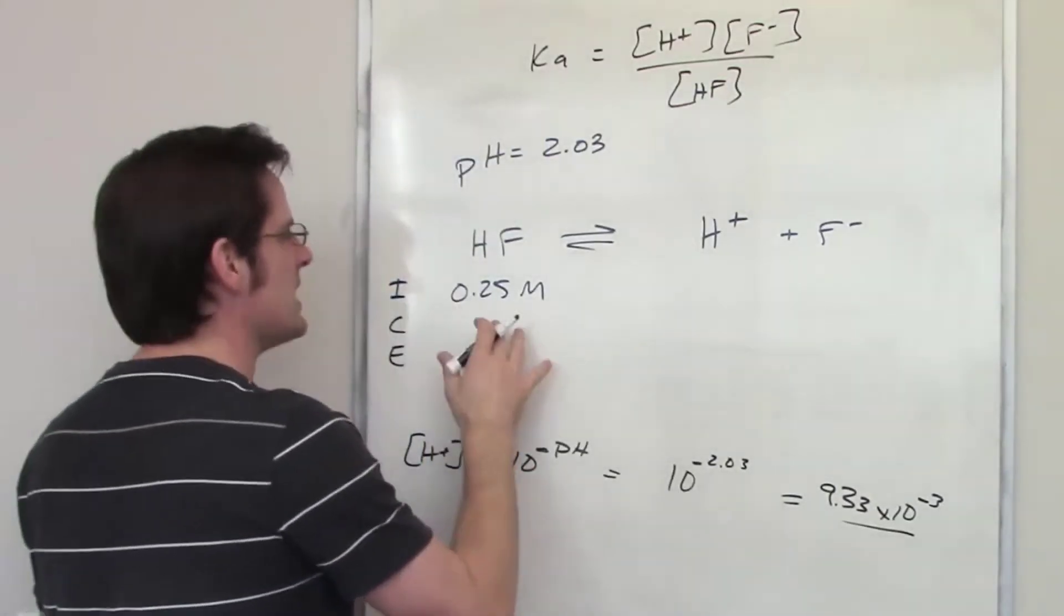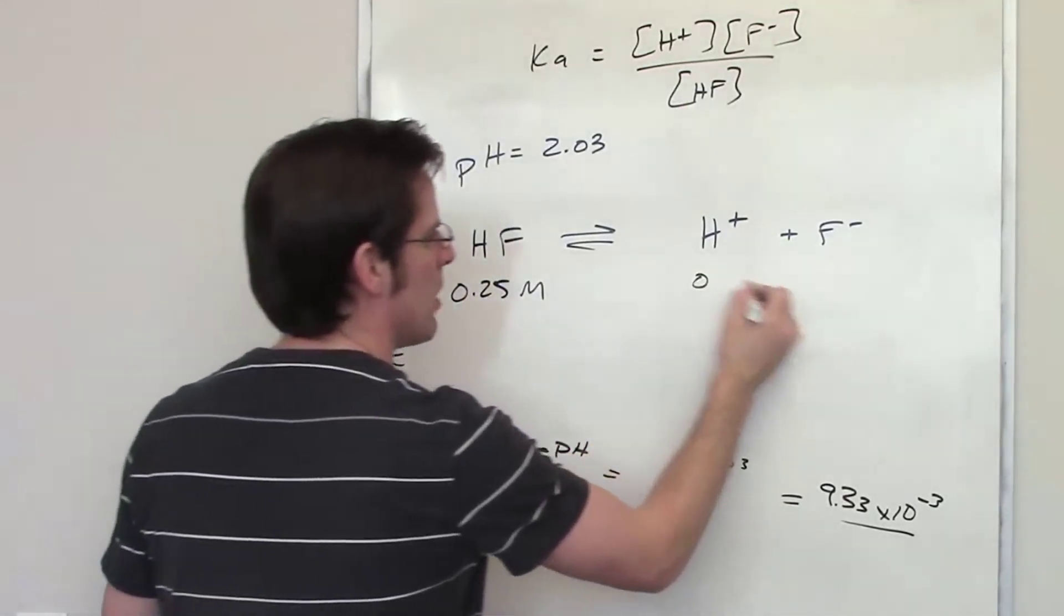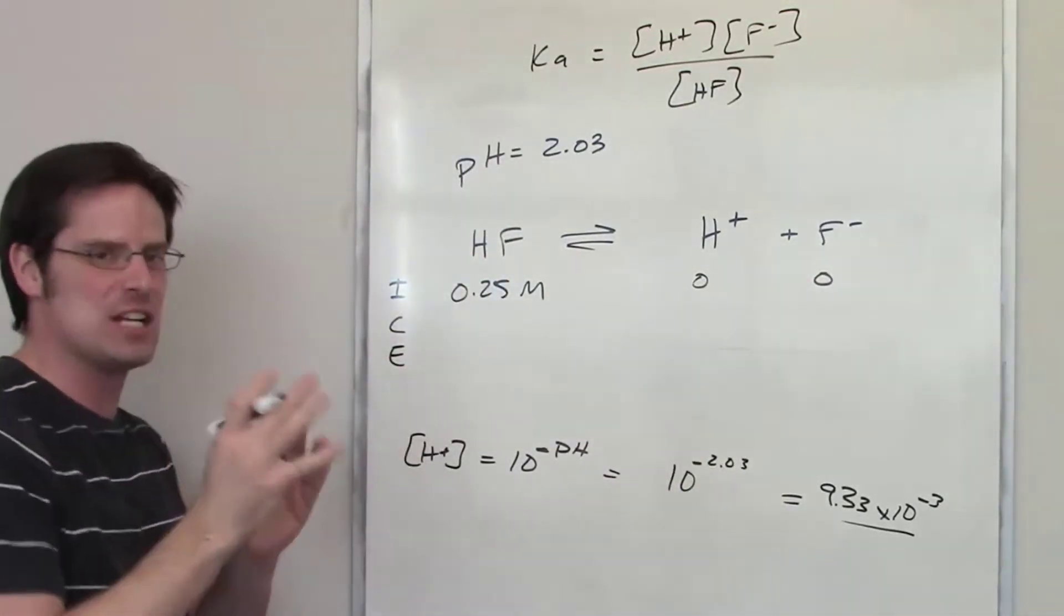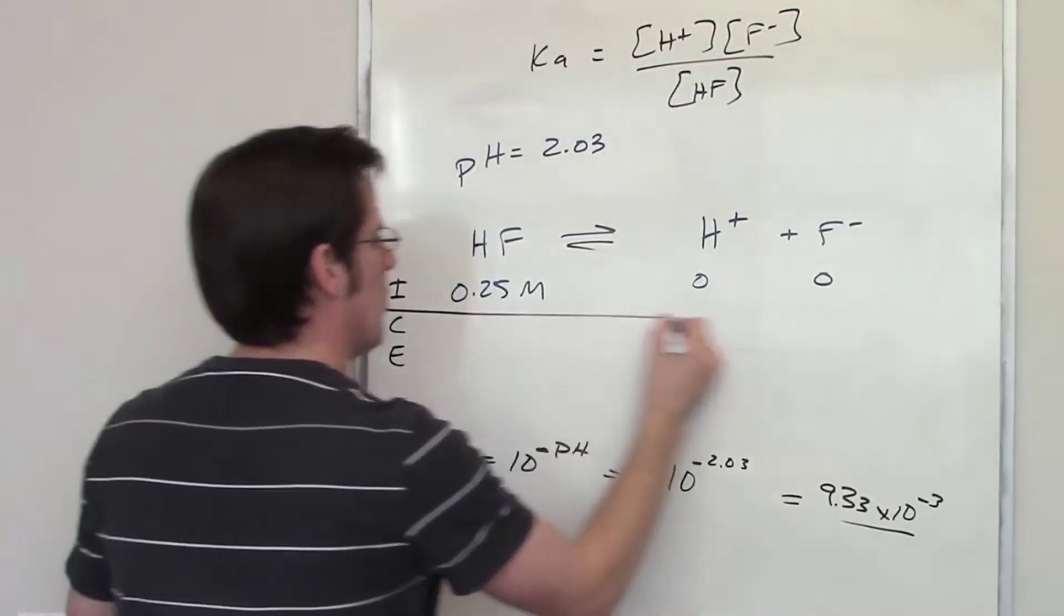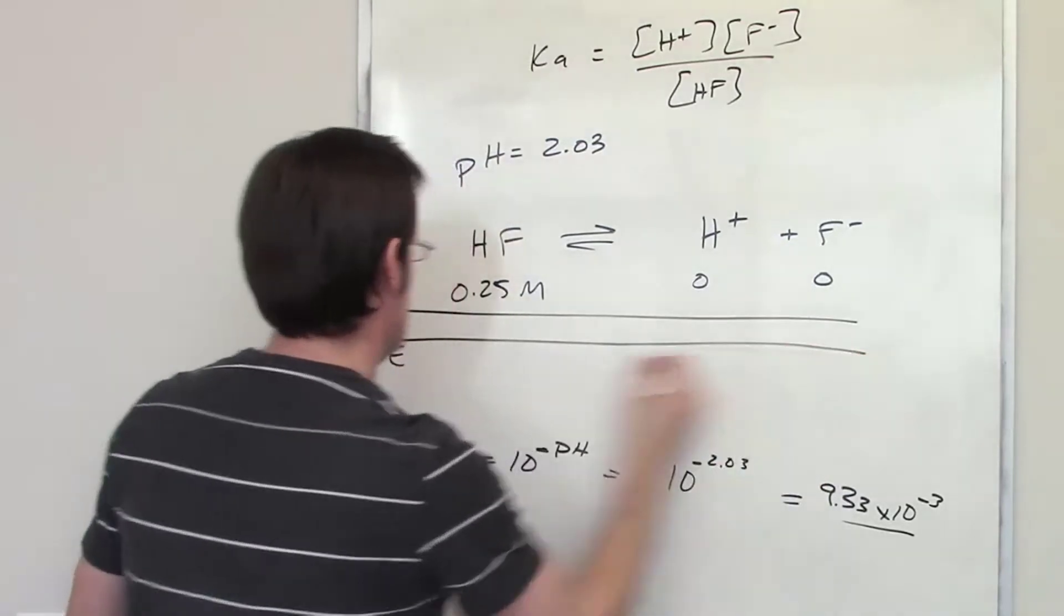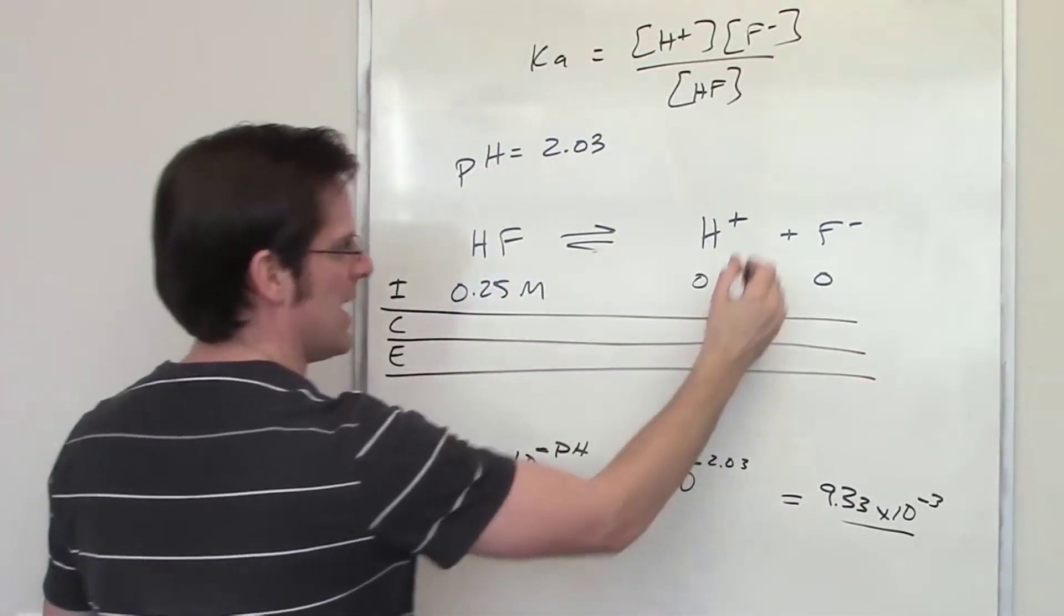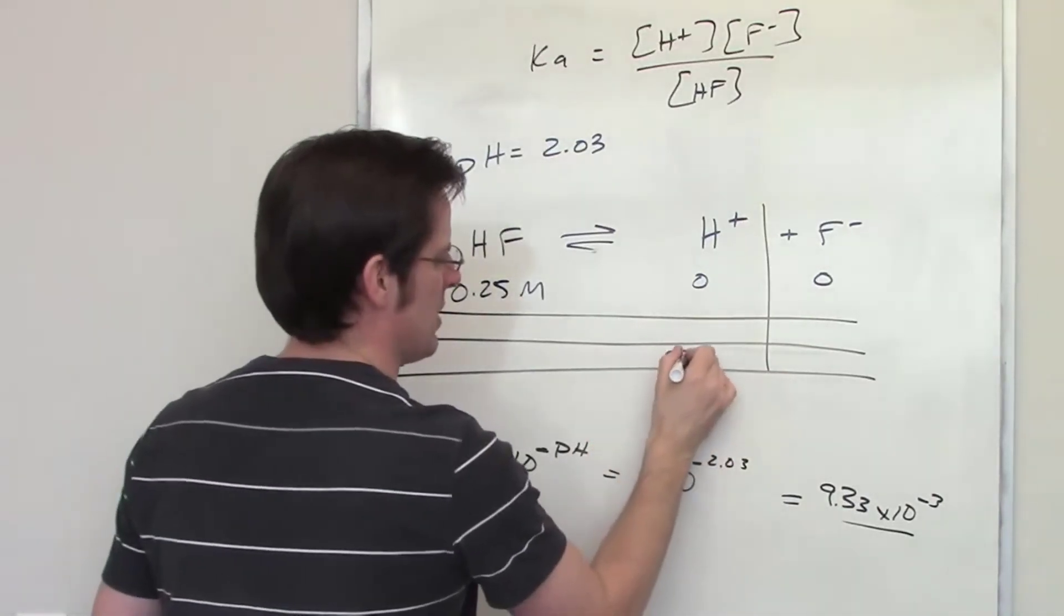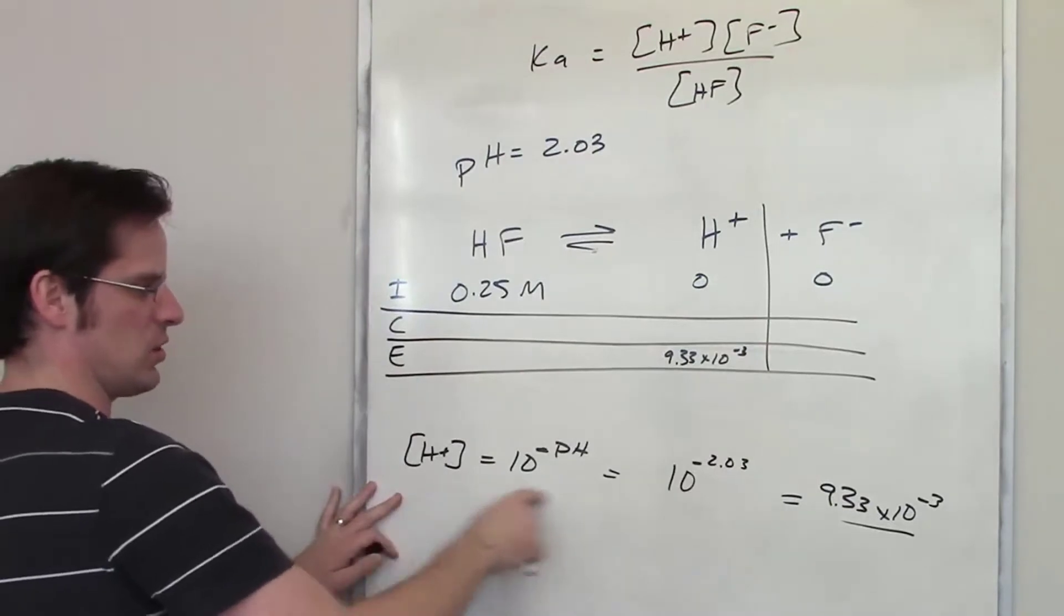Hopefully, it stands to reason that at initiation, I throw in 0.25 molar HF, I've got 0 H plus and 0 F minus at initiation. I have some amount of change. I don't know what that change is right now. But when I'm all done, the final concentration of H plus at equilibrium is going to be 9.33 times 10 to the negative third. And I figured that out by using this equation.